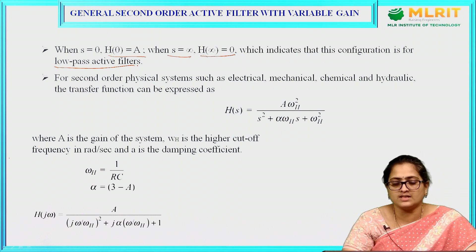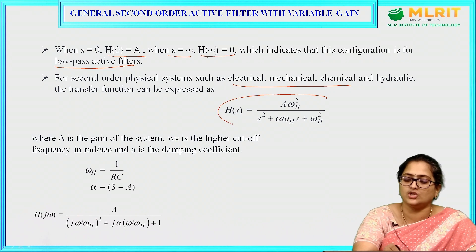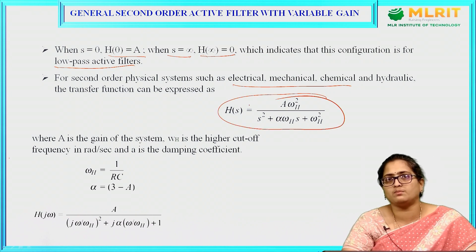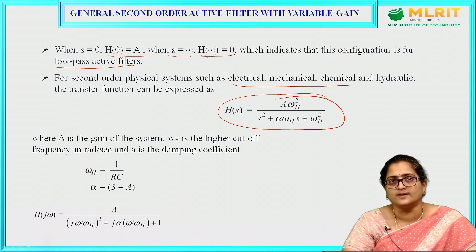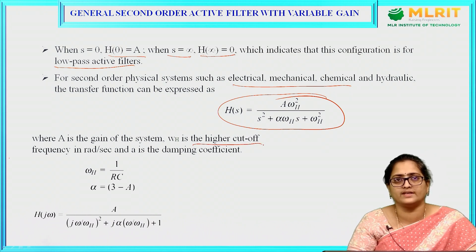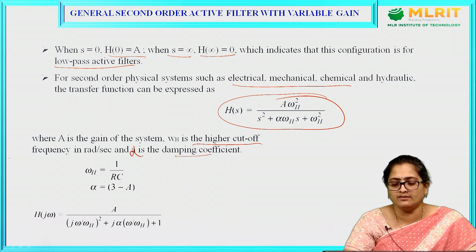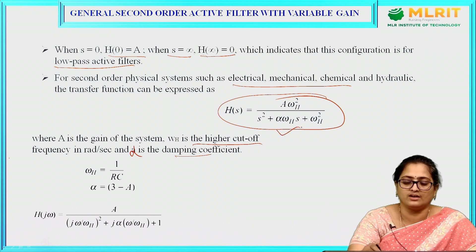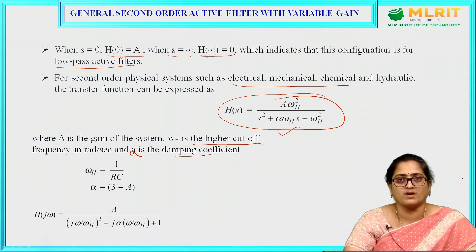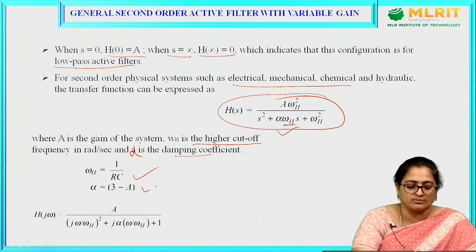For a general physical system — electrical, mechanical, chemical, or hydraulic — the transfer function is given as A·ωh² divided by (s² + α·ωh·s + ωh²), where A is the gain, ωh is the highest cutoff frequency in radians per second, and α is the damping factor. Comparing this with the second order low pass filter transfer function, we get ωh = 1/(RC) and α = 3 − A.